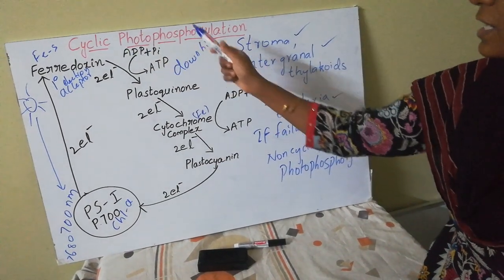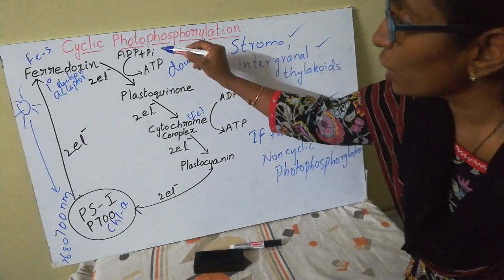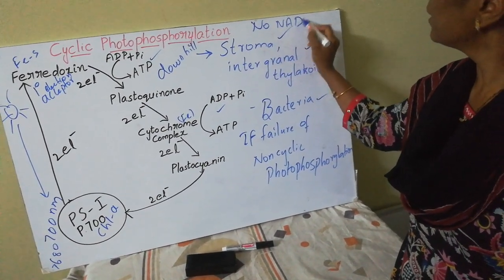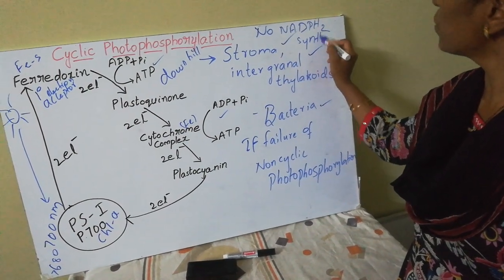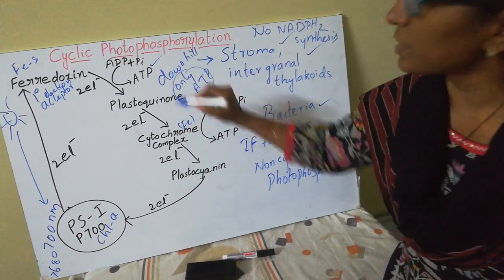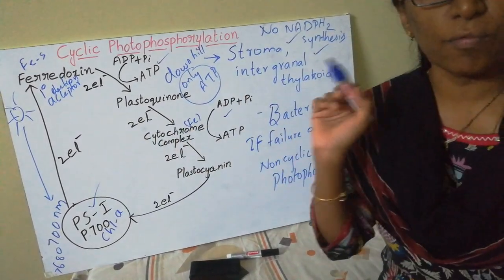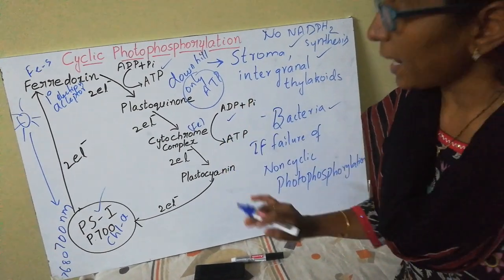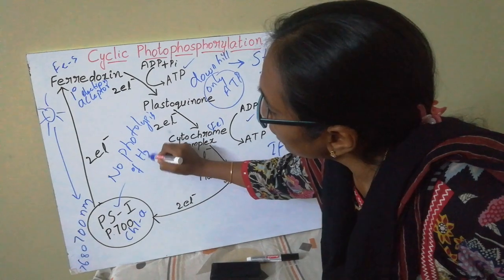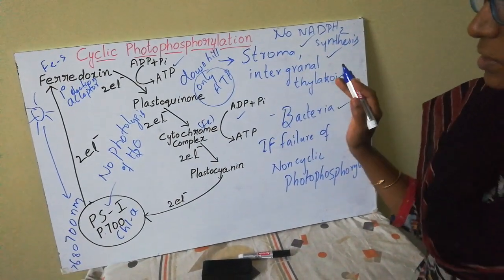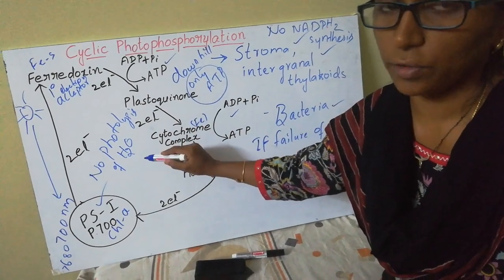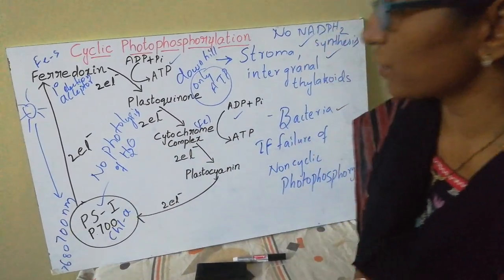In cyclic photophosphorylation, only ATP synthesis can be seen — there is no synthesis of NADPH2 and no reduction of NADP. Only ATP is being synthesized. It is associated with only Photosystem 1; there is no involvement of Photosystem 2, and there is no photolysis of water since Photosystem 2 is absent.